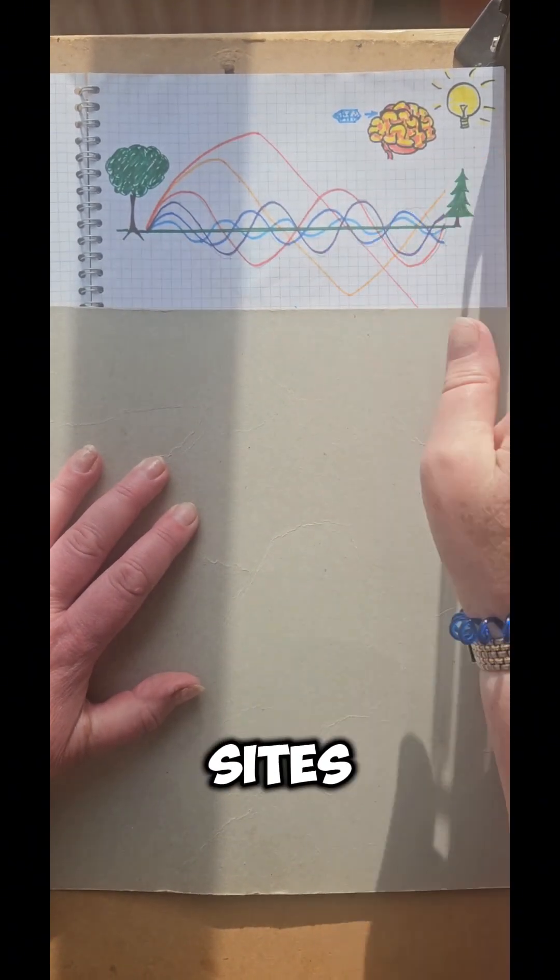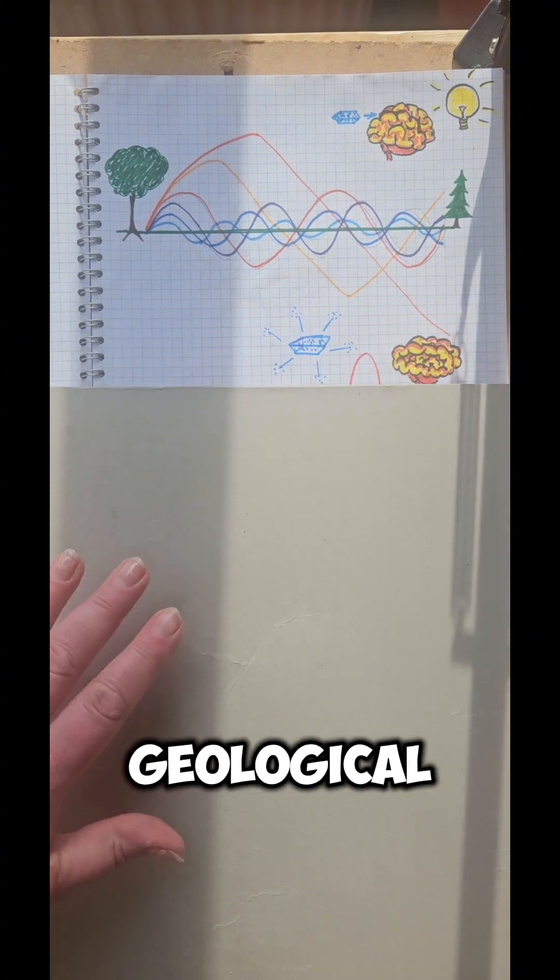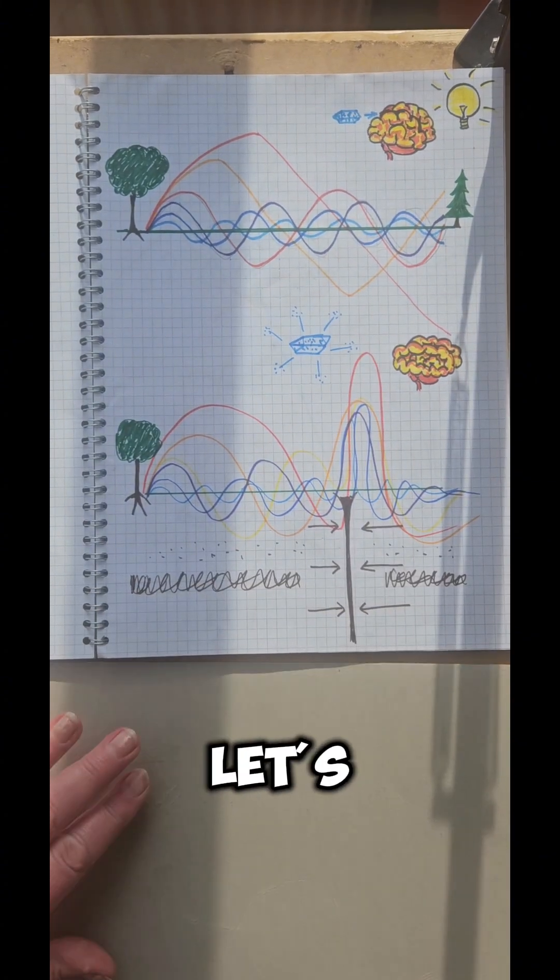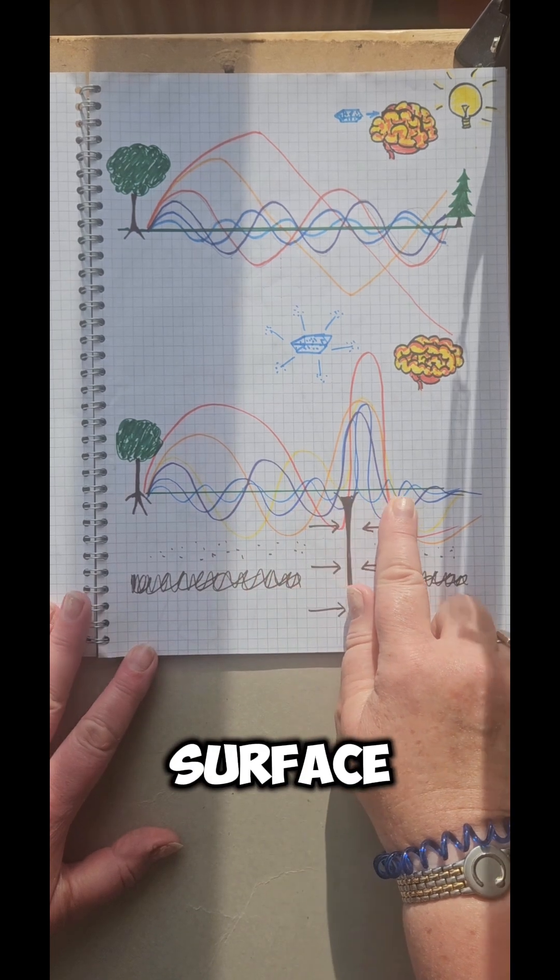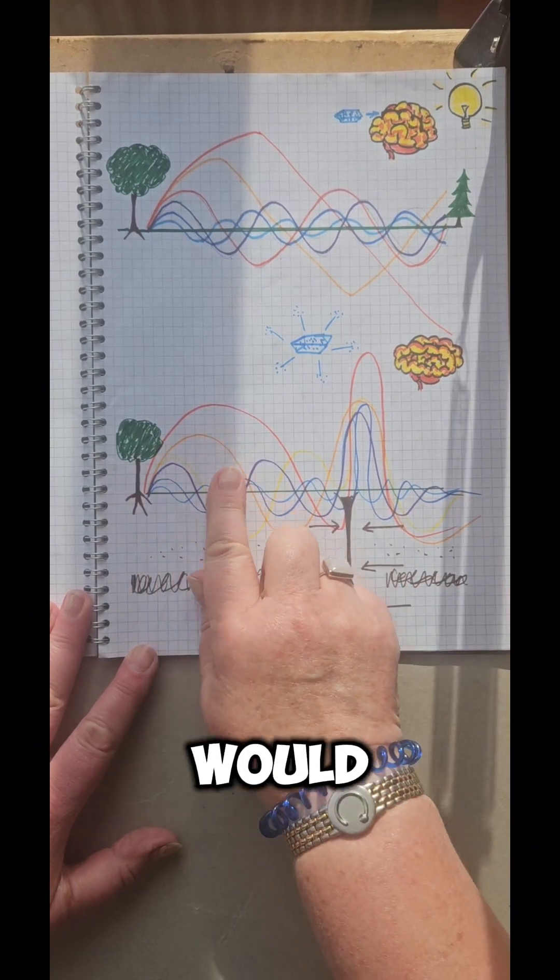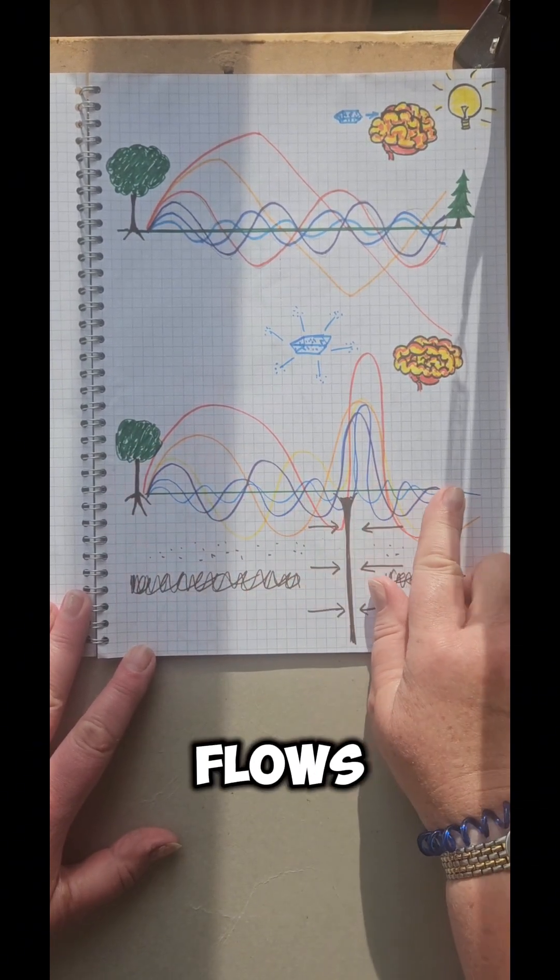We often find sacred sites are located near to geological fault lines. Now, let's look at why. So here we have the surface of the ground again. And ordinarily, we'd have these normal flows of energy.